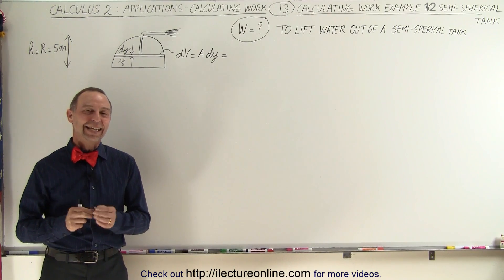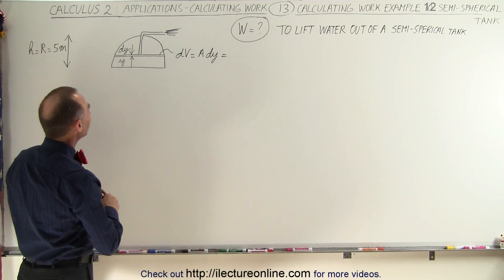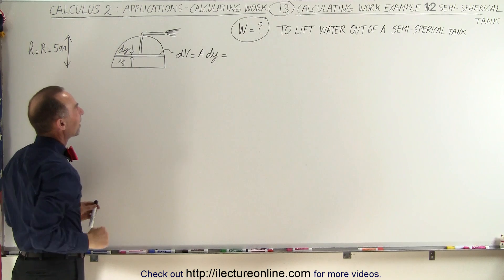Welcome to Electronline. In this example, we're going to lift the water out of a semi-spherical tank. Notice that the height is 5 meters, therefore the radius is 5 meters.